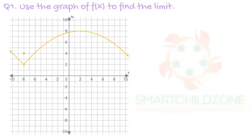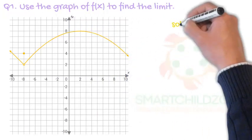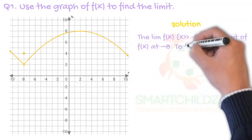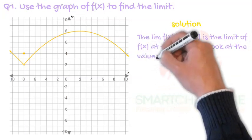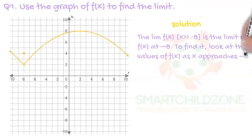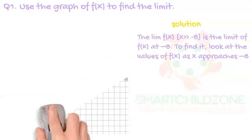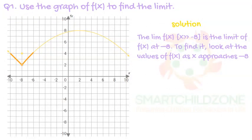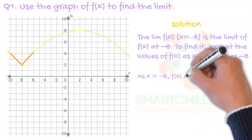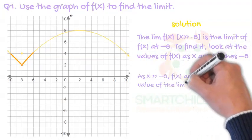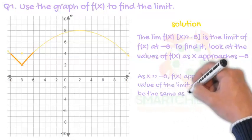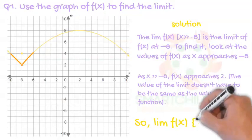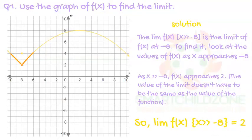Use the graph of f(x) to find the limit. The limit of f(x) as x approaches minus eight is the limit of f(x) at minus eight. To find it, look at the values of f(x) as x approaches minus eight. As x approaches minus eight, f(x) approaches two. The value of the limit doesn't have to be the same as the value of the function, so the limit of f(x) as x approaches minus eight equals two.